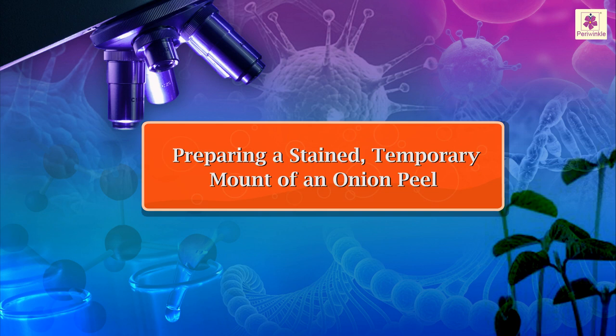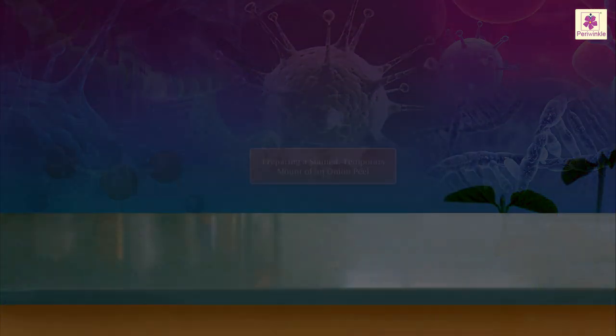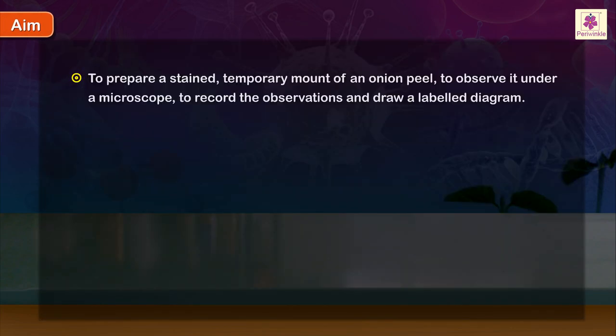Preparing a Stained Temporary Mount of an Onion Peel. Aim: To prepare a stained temporary mount of an onion peel, to observe it under a microscope, to record the observations and draw a labeled diagram.